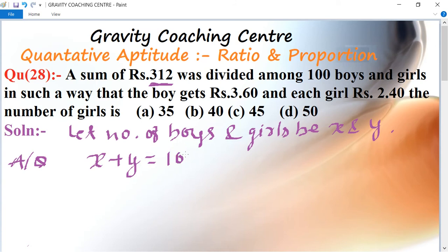The question says each boy gets 3.60 rupees, so 3.60x, and each girl receives 2.40, so 2.40y, equals the total which is 312. So 3.60x + 2.40y = 312. This is the second equation.